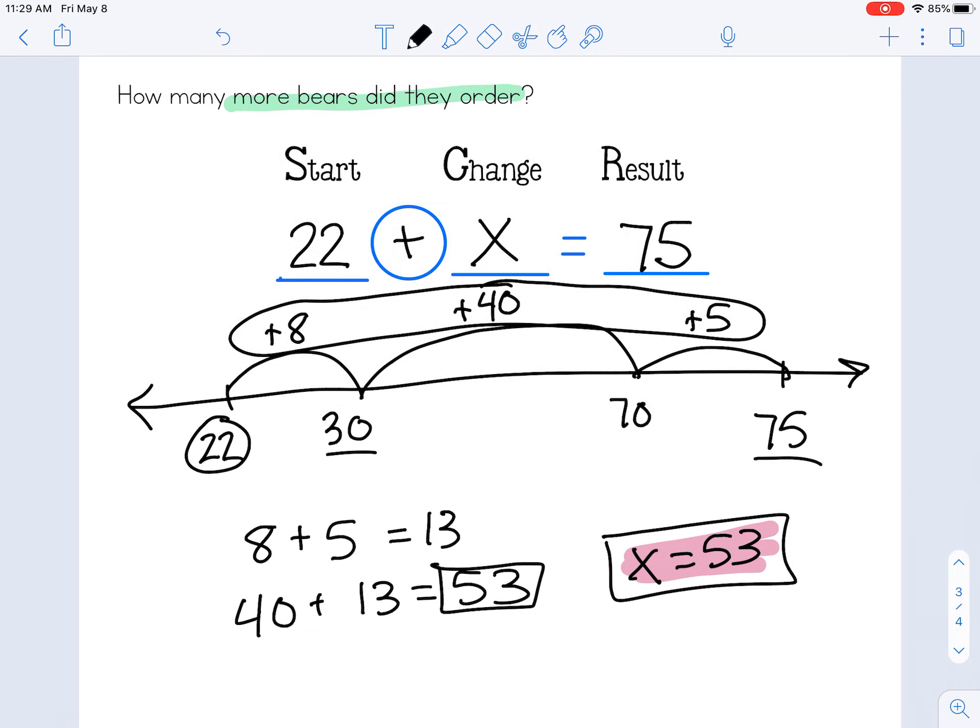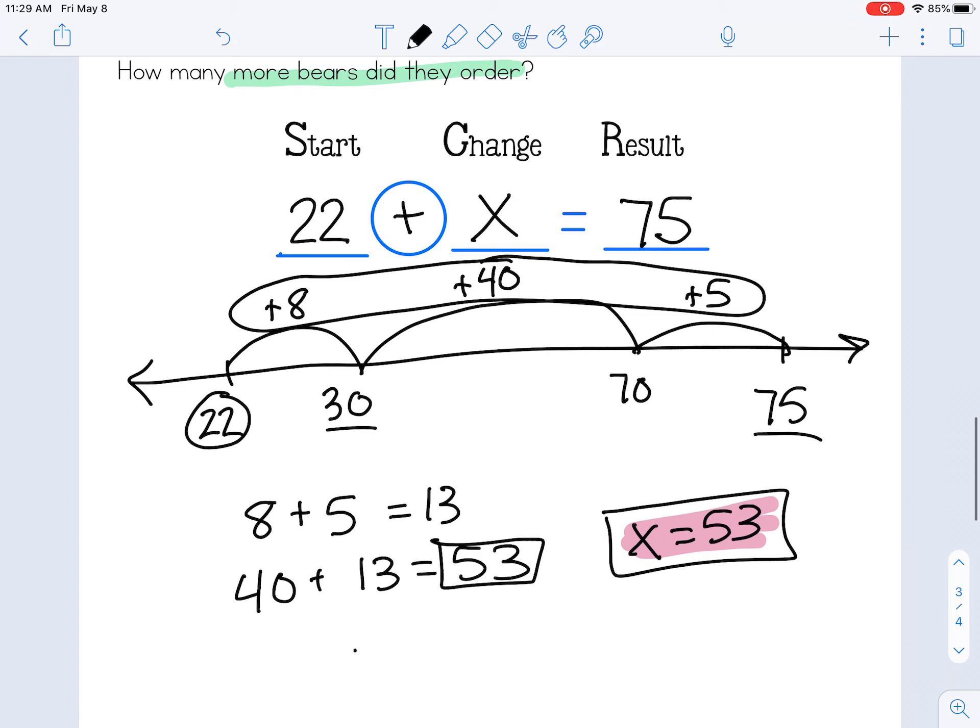So x equals 53. And then that is my entire answer. 22 plus 53 equals 75.